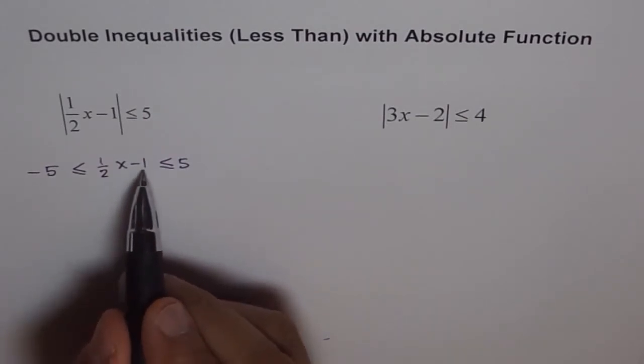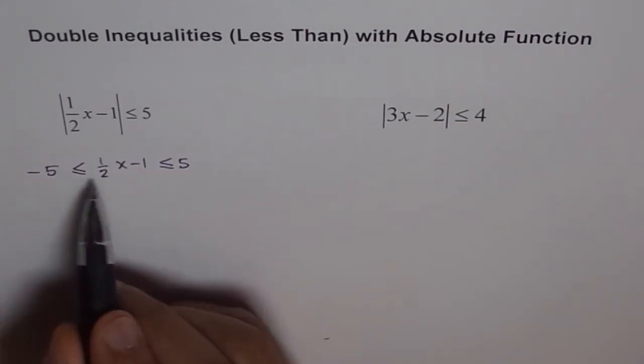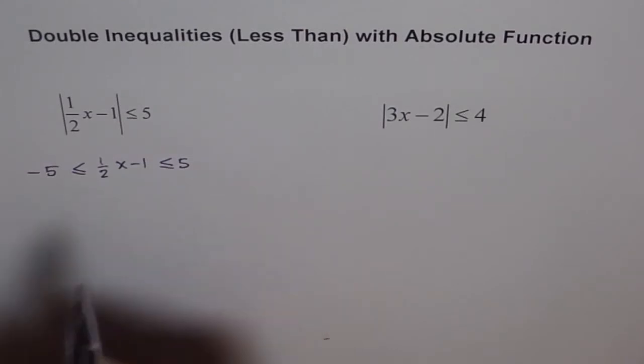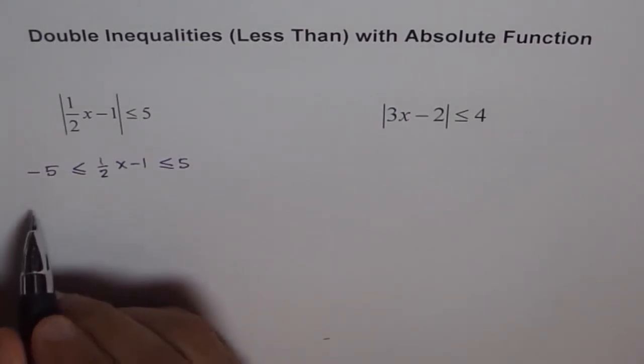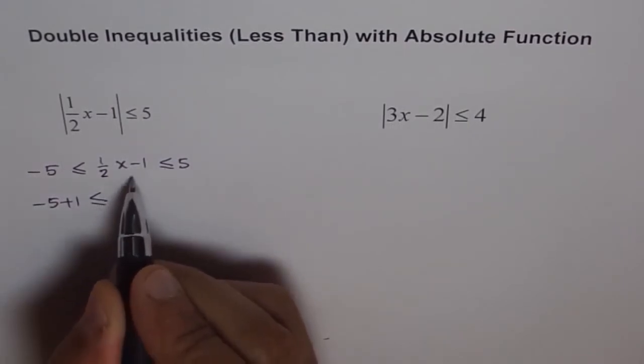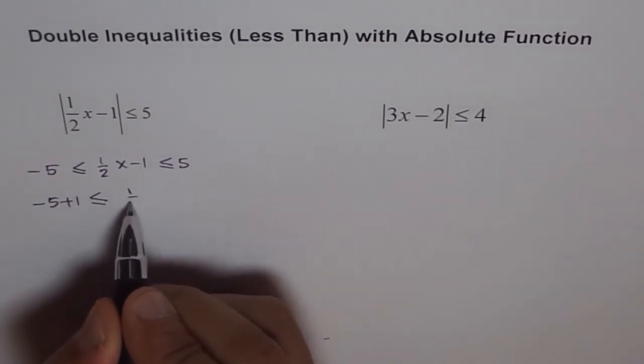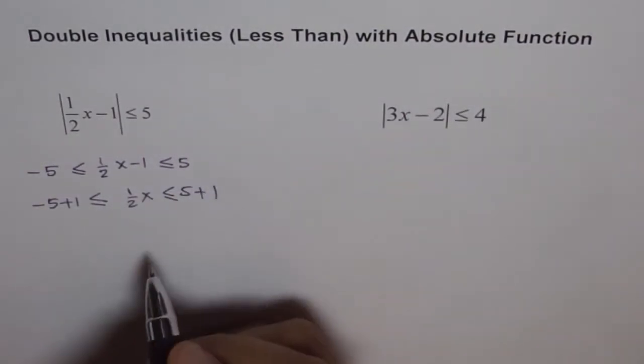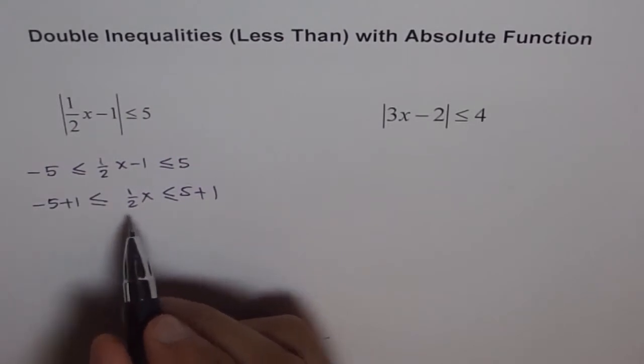To get rid of 1, we will add 1 on every side. So, we will do plus 1 here, plus 1 here and plus 1 here. When we add plus 1 here, plus 1 and less than equal to, when we add plus 1 here, we get just half x. Minus 1 plus 1 and we get 5 plus 1, 6. So, that is what we get.